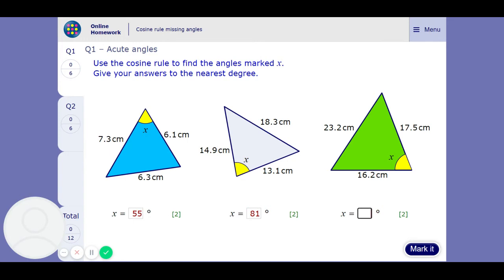You're going to get 16.2 squared plus 17.5 squared take away 23.2 squared all over 2 times 16.2 times 17.5 inverse cos and that's going to get you 87 to the nearest whole number.